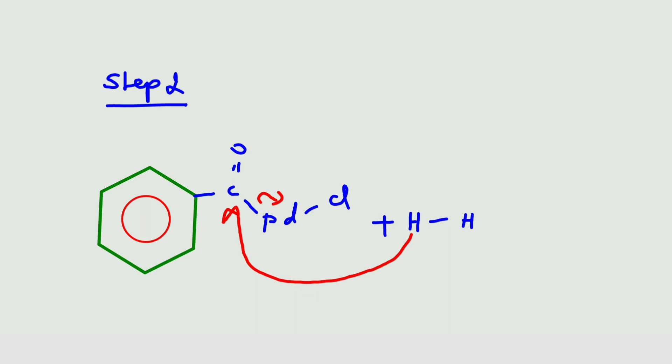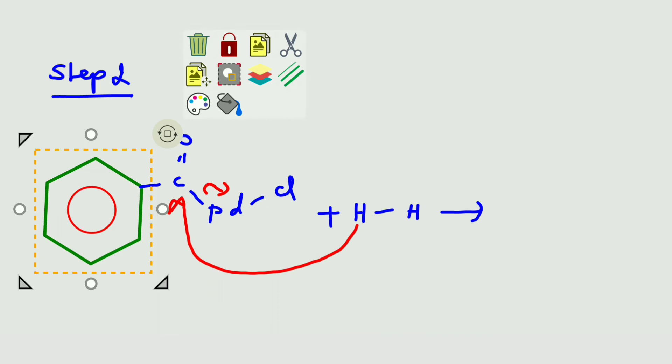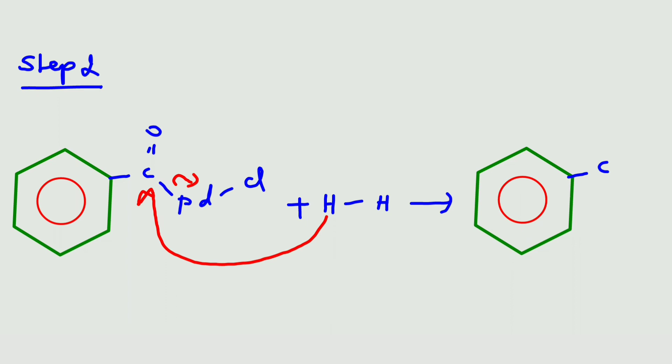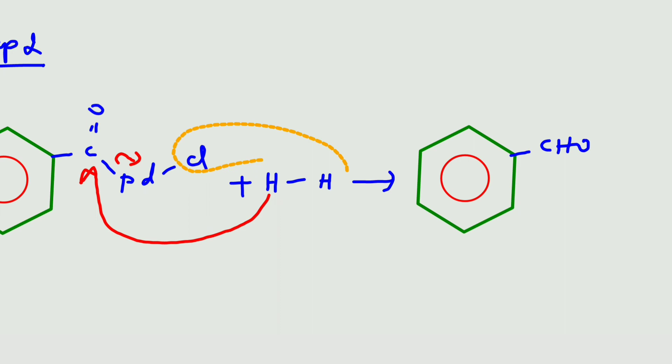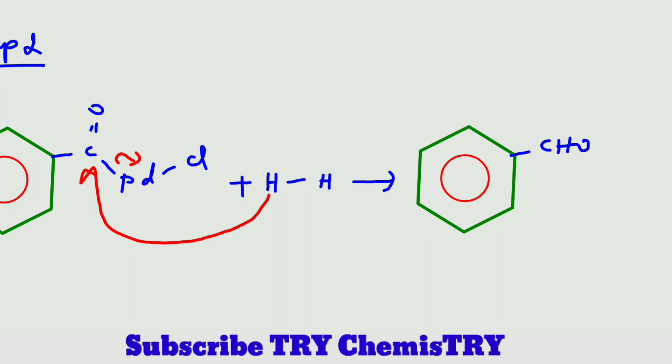So here we can get the product. Finally, we can get the product benzaldehyde, CHO, with removal of hydrochloric acid plus palladium.